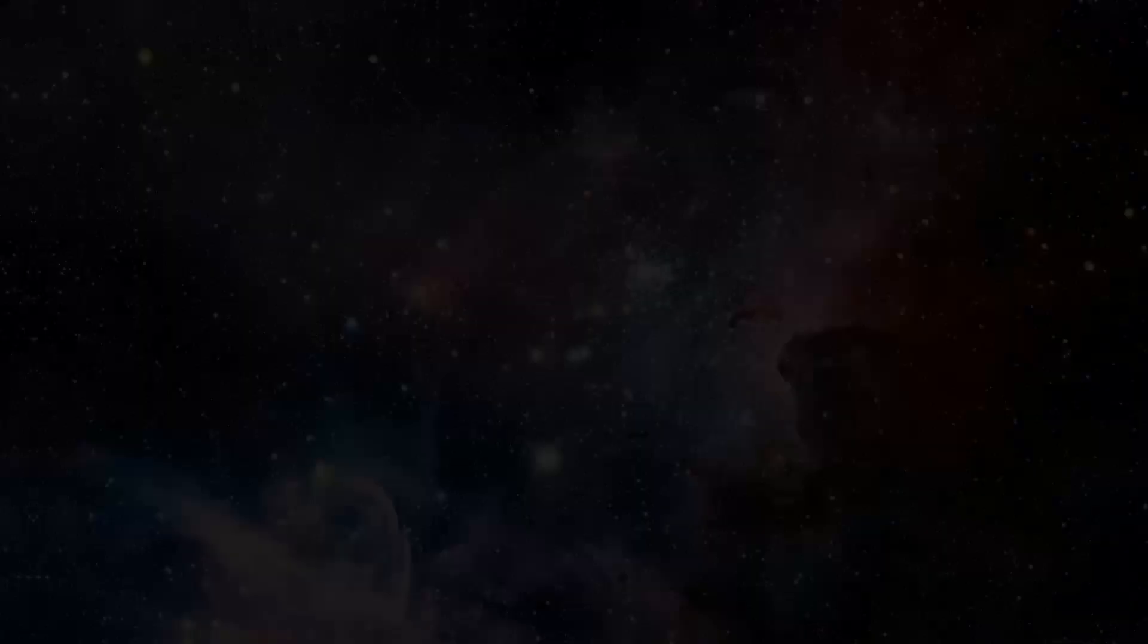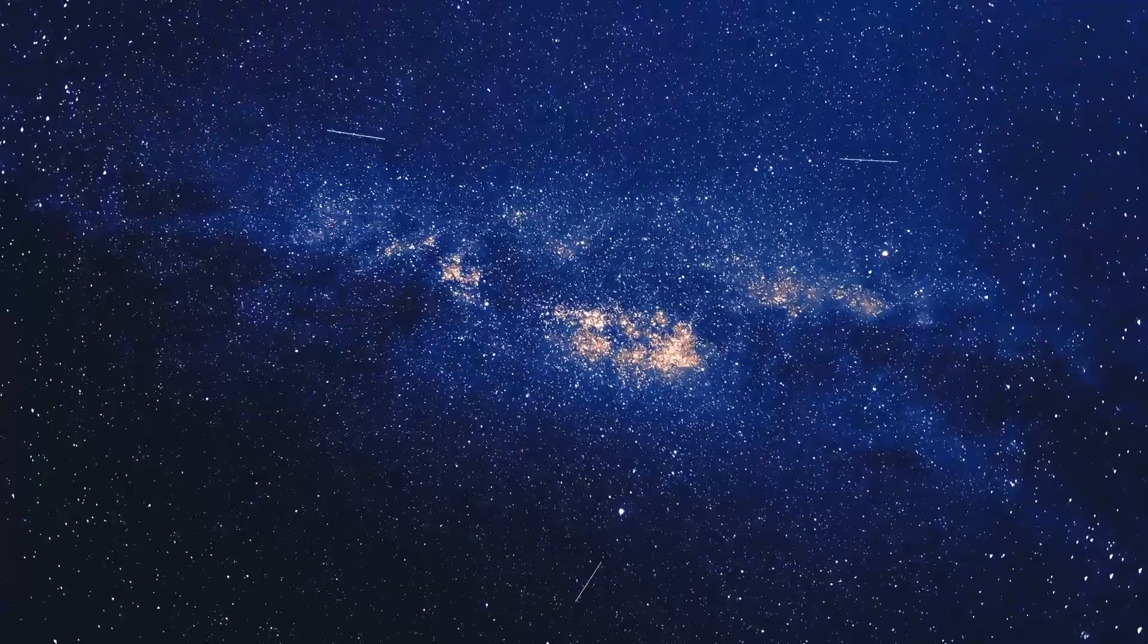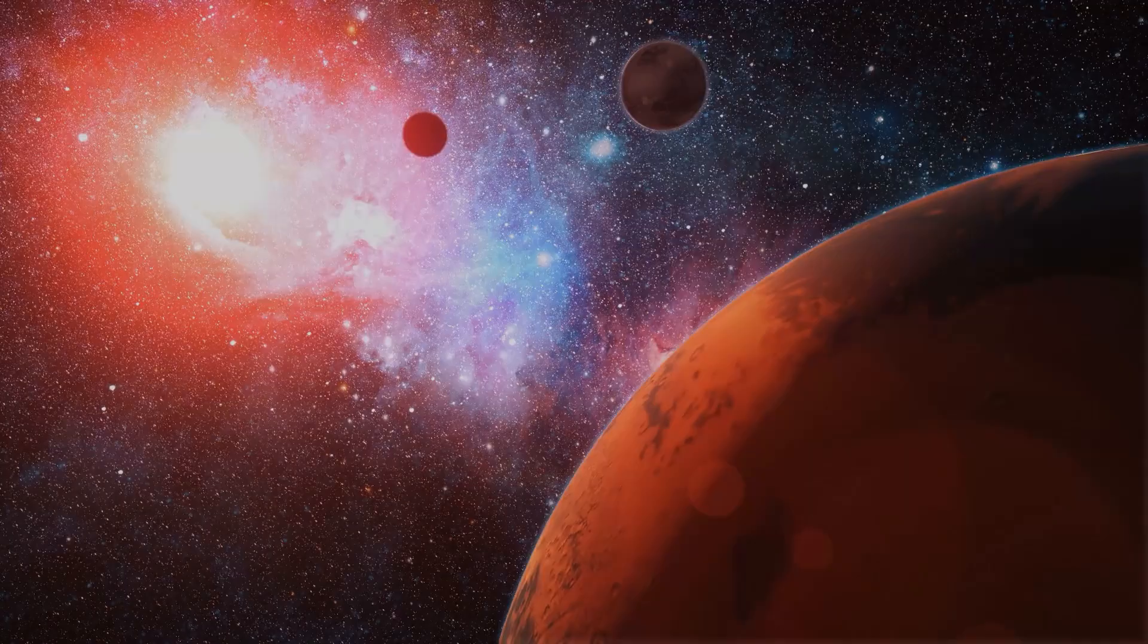John Clauser, Alan Aspect, and Anton Zeilinger are responsible for grasping the concept of reality in our cosmos as we have long acknowledged it. What is reality? And is the universe we live in a fantasy? If the universe is so enormous, and there are possibly trillions of planets in it, then why haven't we found life on any of them?